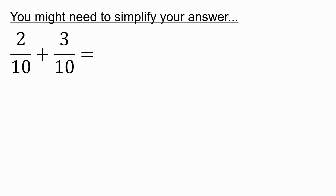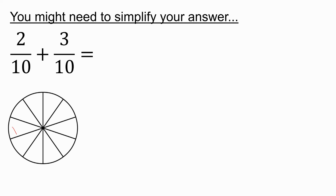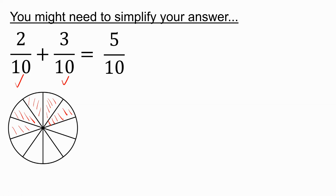Finally, you might need to simplify your answer. Here, we have two tenths plus three tenths, which is obviously going to be five tenths. We have two out of ten plus three out of ten — I've got this whole cut into ten parts, shading in two parts for the two tenths and then three tenths. In total, we should notice that we've shaded in exactly half of the whole. So the answer needs to be a half, but when we work it out it's five over ten. We then need to simplify by dividing the numerator and denominator by the common factor of five, giving an answer of one over two, or one half.